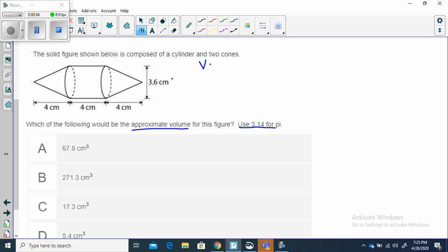The volume of this whole thing is going to be equal to the volume of that middle cylinder plus two times the volume of one of the cones, right? Let's find the volume of the cylinder and the volume of the cone.